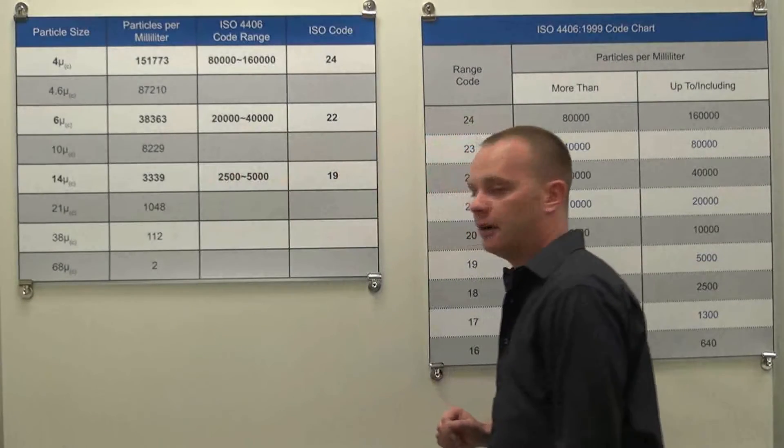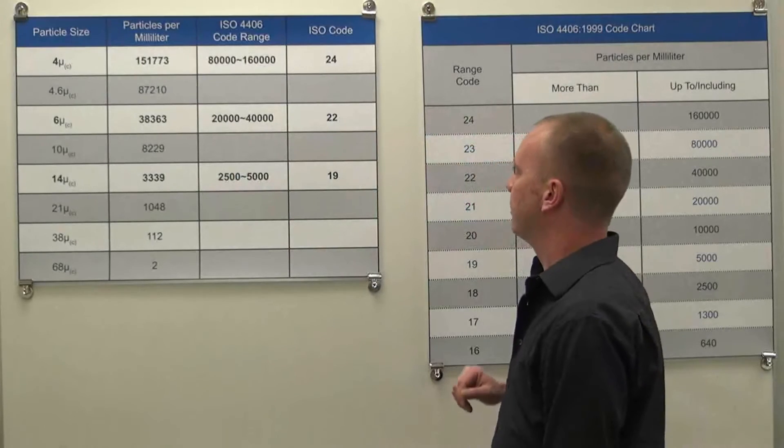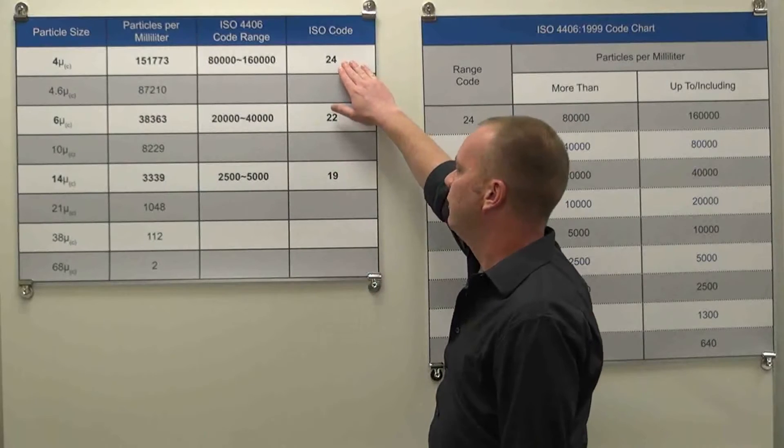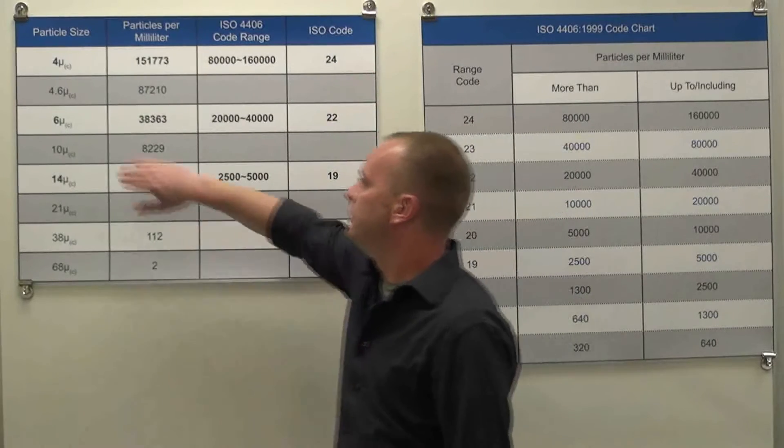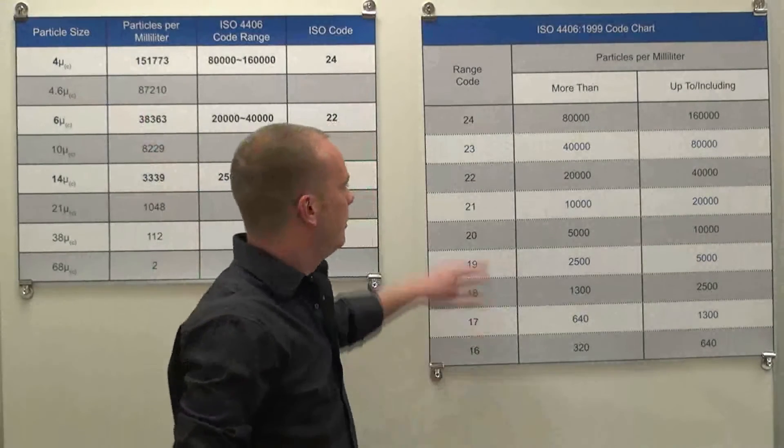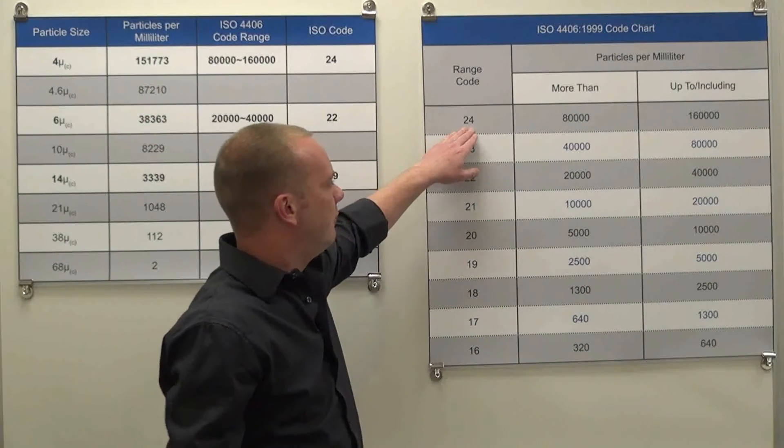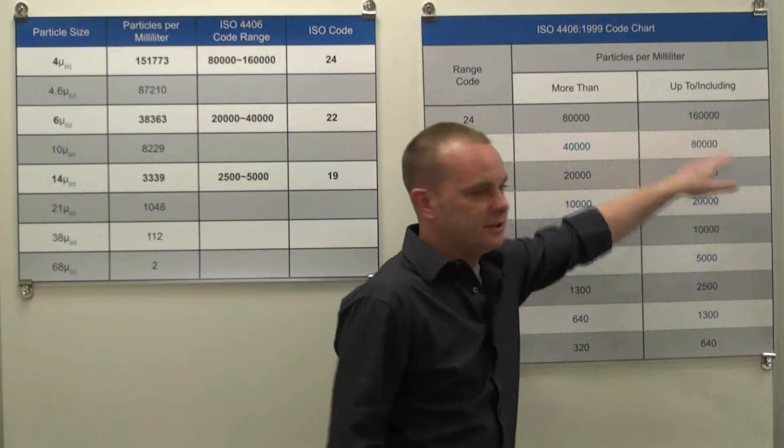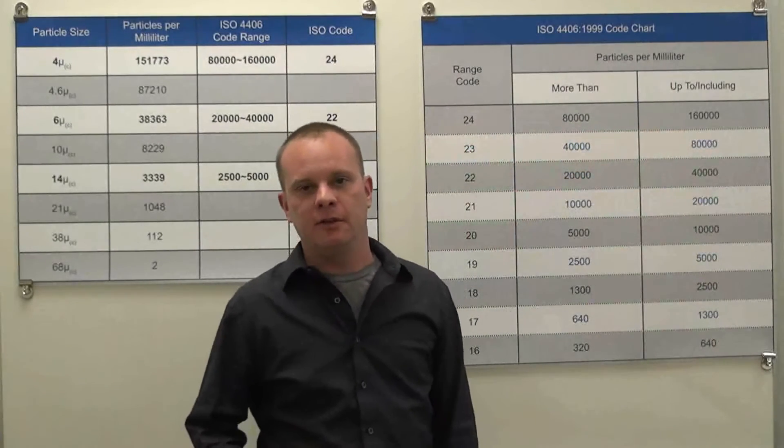So let's take a look at our example ISO code and find out what it means. Our code is 24, 22, 19. Our first code, 24, represents all particles that are 4 micron and larger per milliliter of fluid. So, if we look at our reference chart, we see that a code of 24 means that we have between 80,000 and 160,000 particles per milliliter that are 4 micron in size and larger.